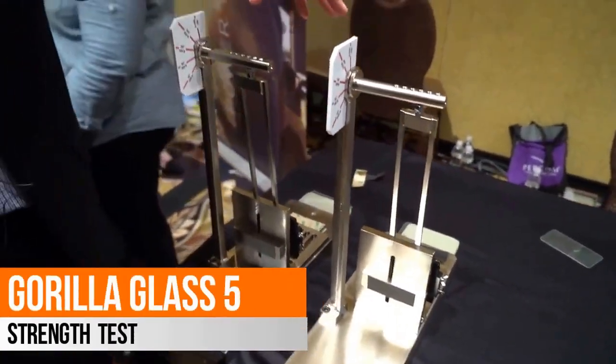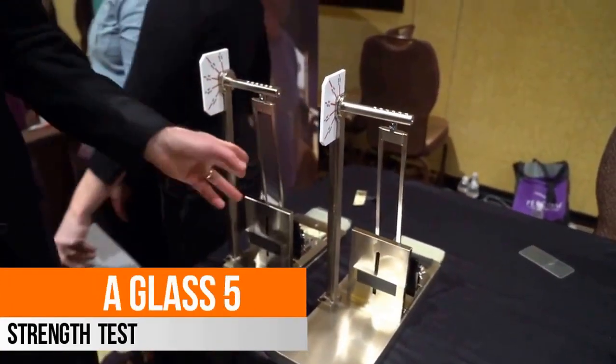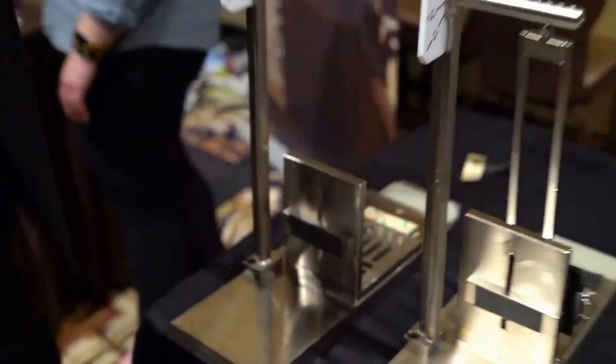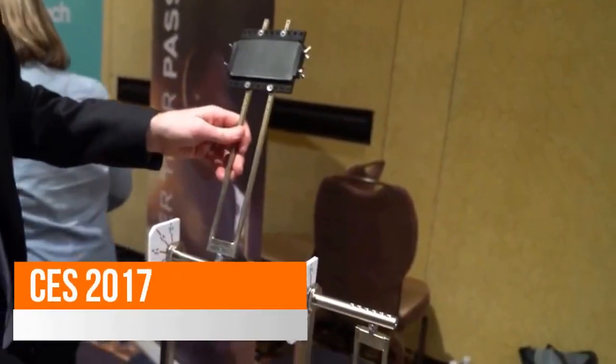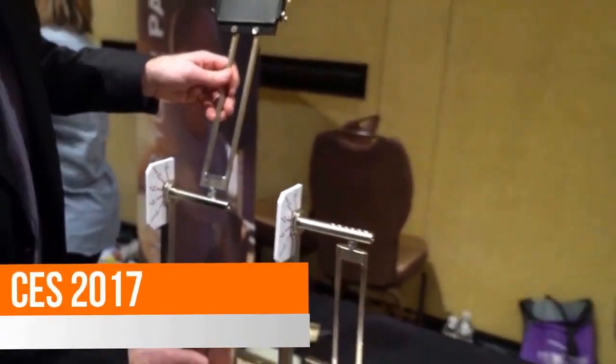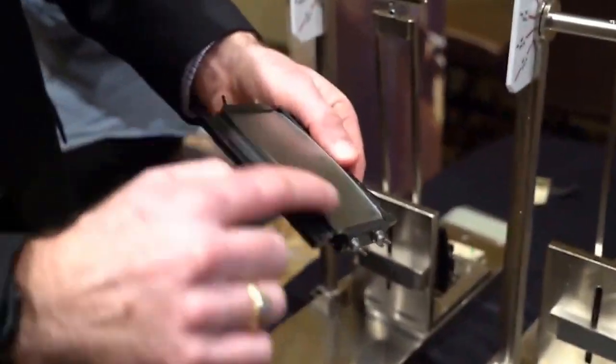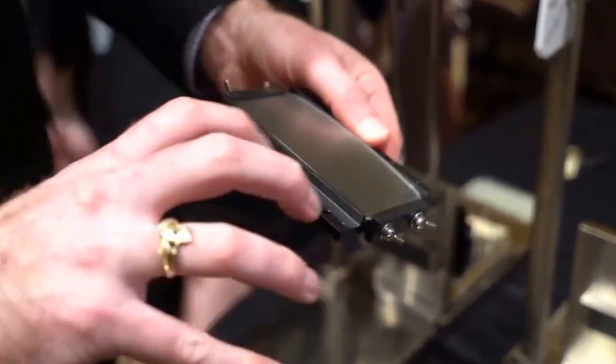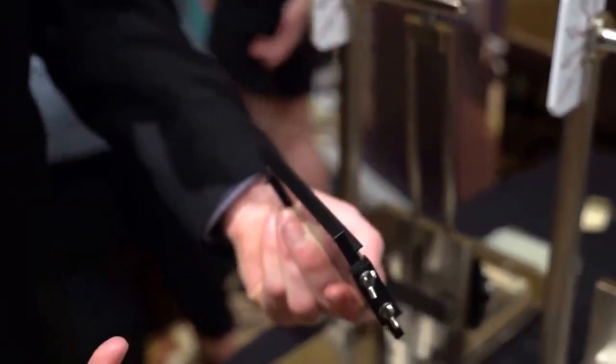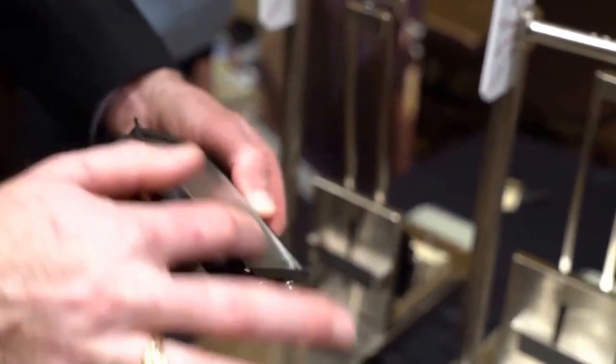This is set to simulate a drop event by using a pendulum that has glass attached to it, impacting 180 grit sandpaper. We've mounted the glass inside of a curvature that simulates the way a phone bends when it falls, because when a phone hits the ground it actually flexes, and so we're flexing the glass.